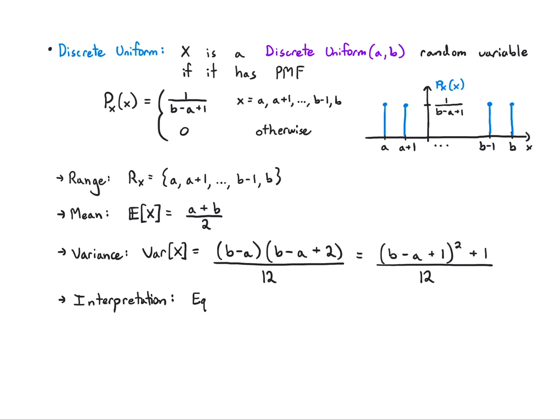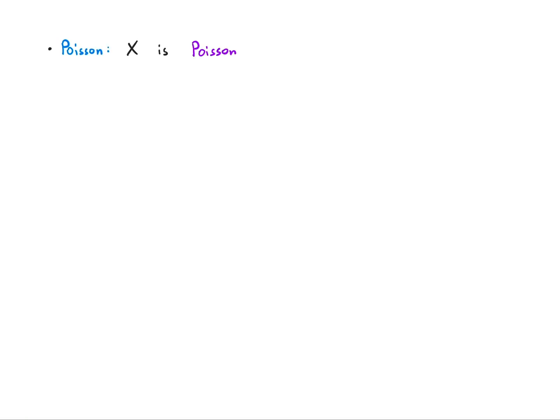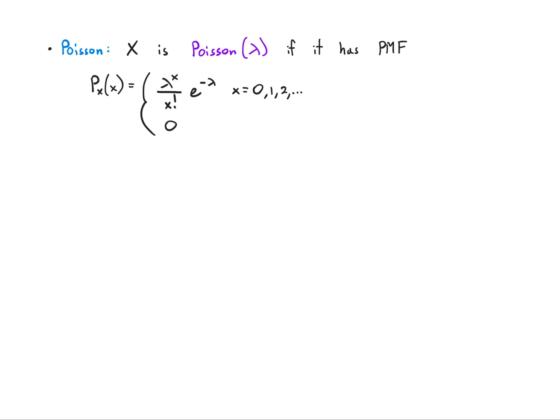The interpretation is simple: equally likely outcomes. An application is rolling a six-sided die, where a = 1 and b = 6. Finally, we have the Poisson random variable. X is Poisson(λ) if it has PMF: p(x) = λ^x / x! * e^(-λ) for x = 0, 1, 2, ... up to infinity. This might seem like an odd function to write down, but it's a very important PMF.